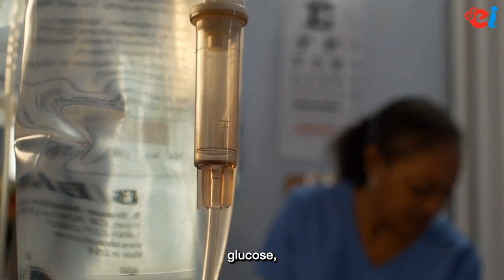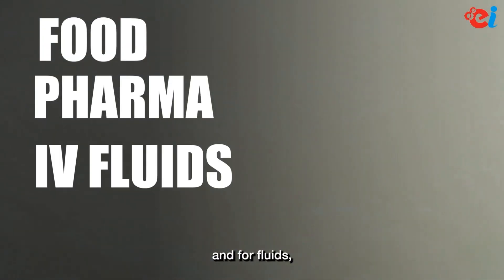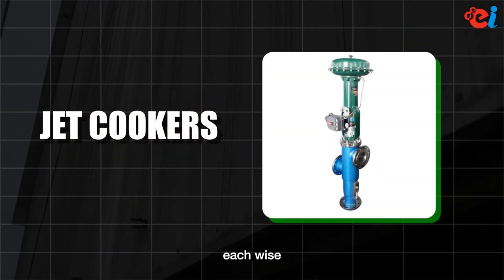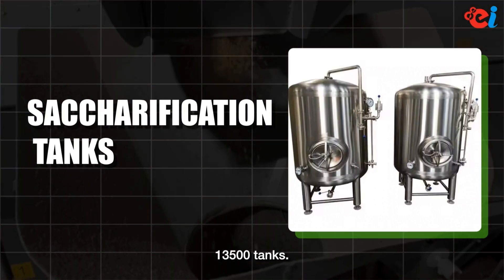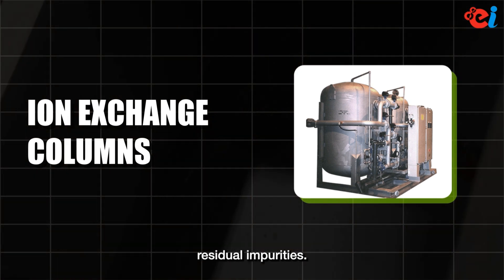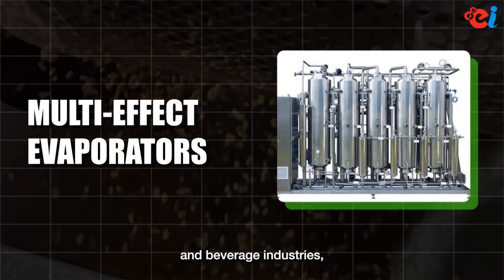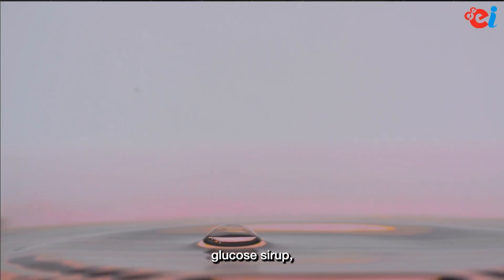Dextrose, which is a form of glucose, is a simple ingredient derived from maize starch. Starch is hydrolyzed using enzymes or acids to produce dextrose, a simple sugar used in food, pharma, and IV fluids. Machines used include jet cookers to liquefy starch using alpha-amylase enzymes, saccharification tanks to convert liquefied starch to glucose, decolorization tanks with activated carbon treatment and ion exchange columns to remove residual impurities, and multi-effect evaporators to concentrate glucose syrup. Dextrose is widely used in food and beverage industries, pharmaceutical industries, medical applications, and in fermentation.